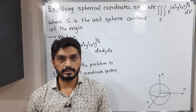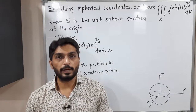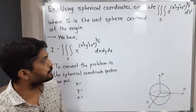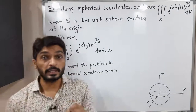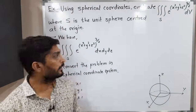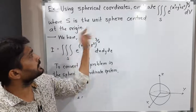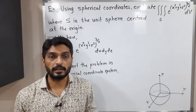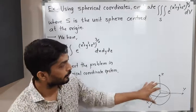Hi everyone, let us discuss this example. In this example, we have to find the value of this triple integration. I have written here using the spherical coordinate system. S is a unit sphere, that means a sphere having center (0,0,0) and radius 1.